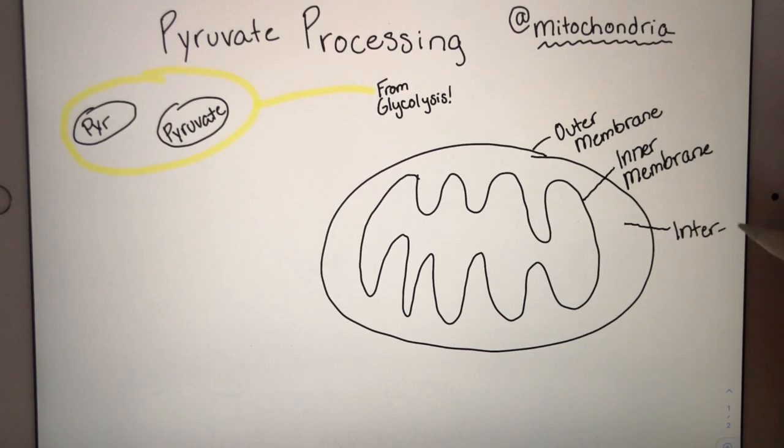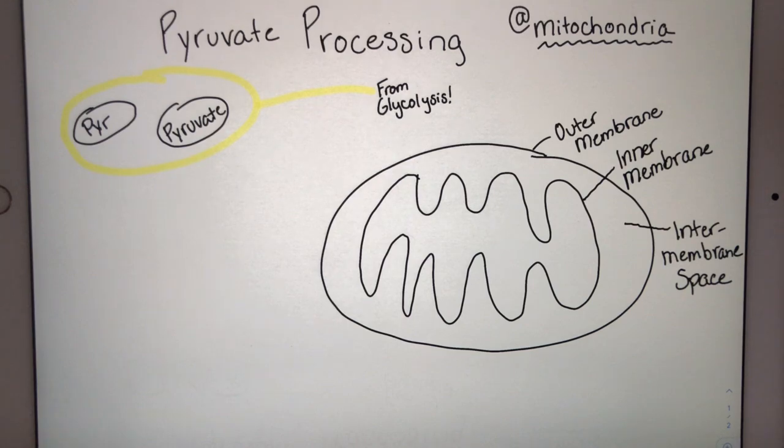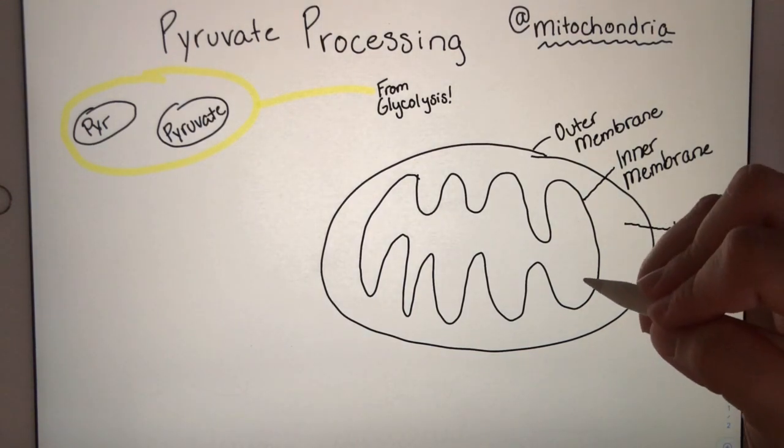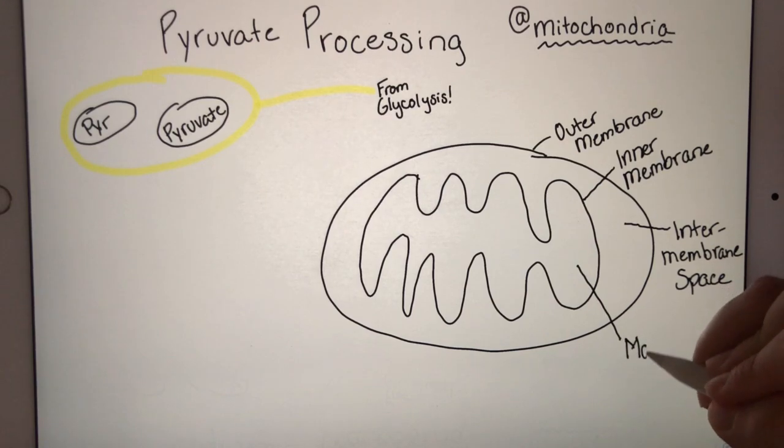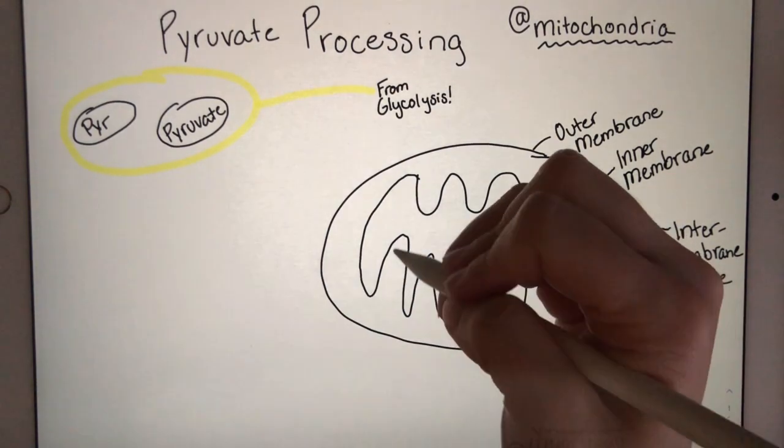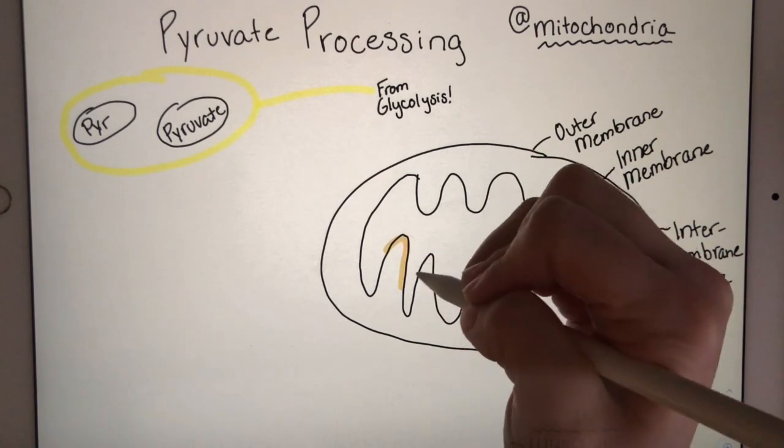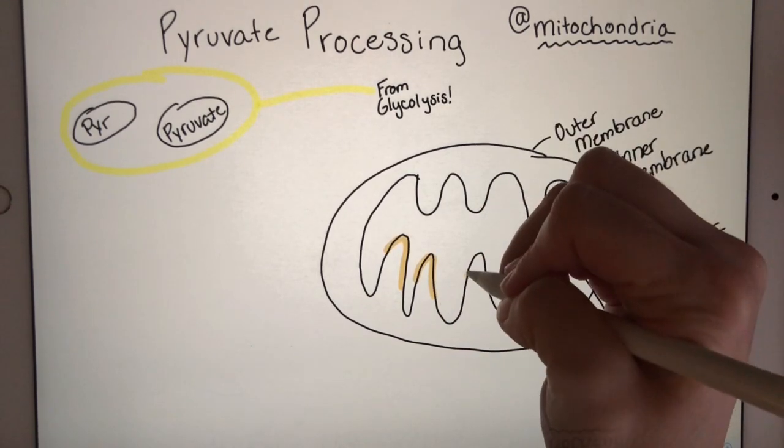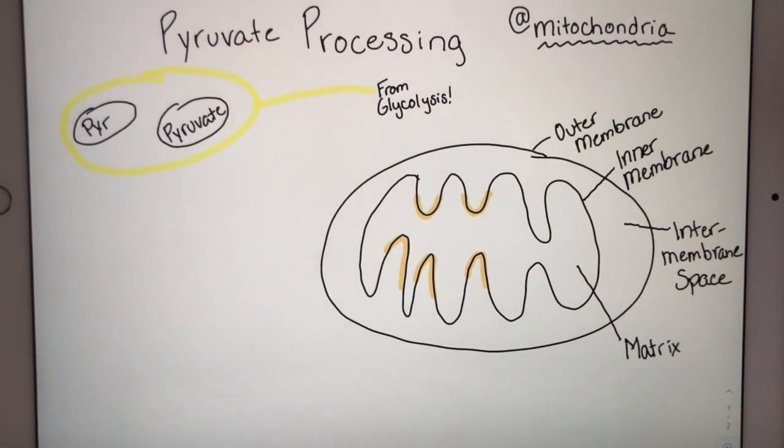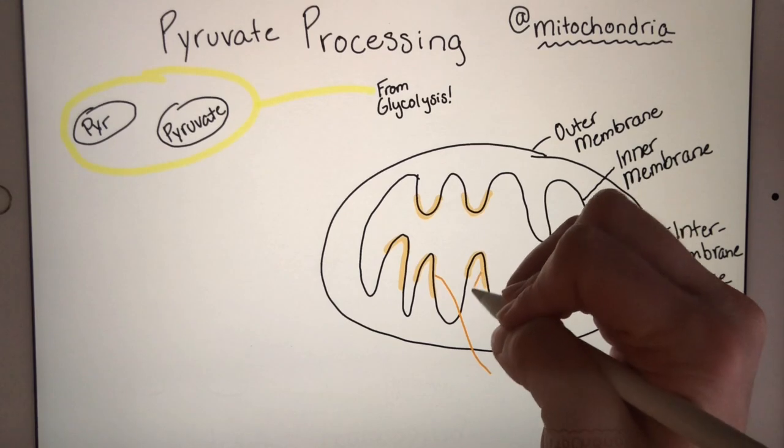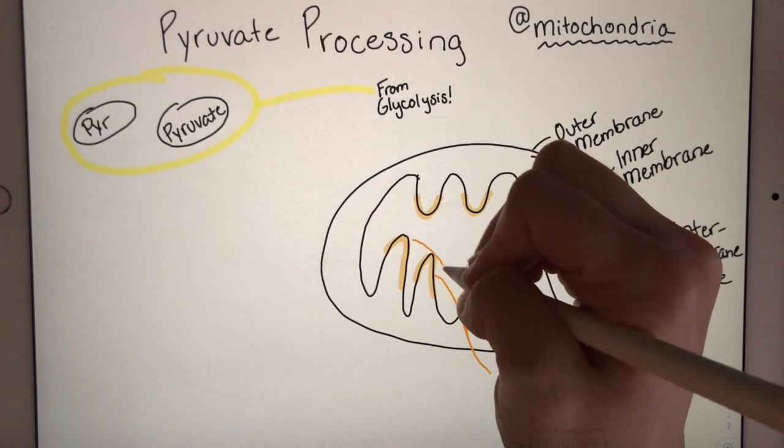The space between them is the intermembrane space. The area inside the inner membrane is called the matrix. And the last part of the mitochondria are the folds in the inner membrane. Those infoldings are the cristae.